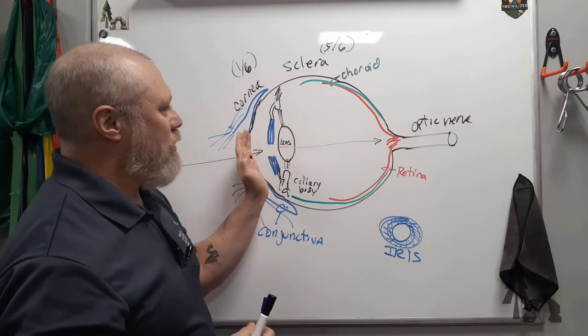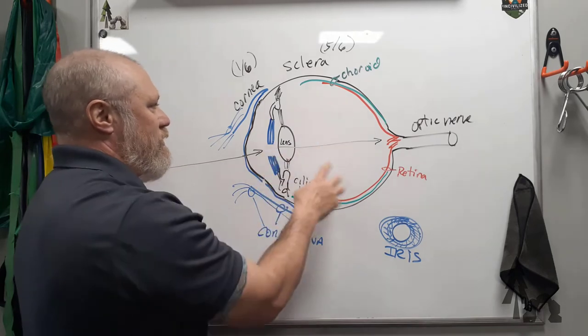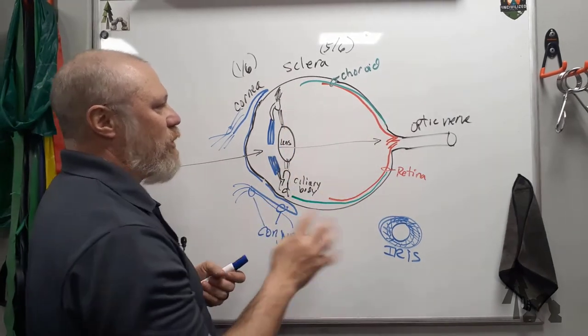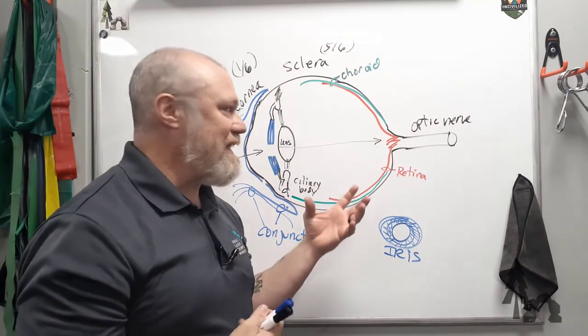Once you get posterior to, or deeper into the eyeball itself, posterior to the lens, this would be the vitreous, or posterior chamber, full of vitreous humor, which is more of a thick, jelly-like substance.